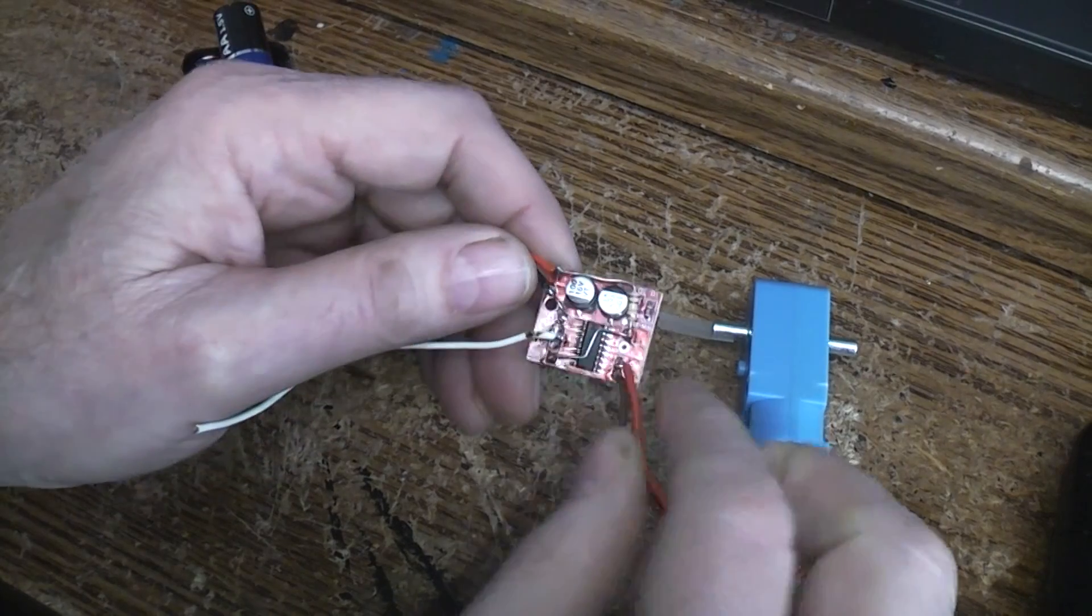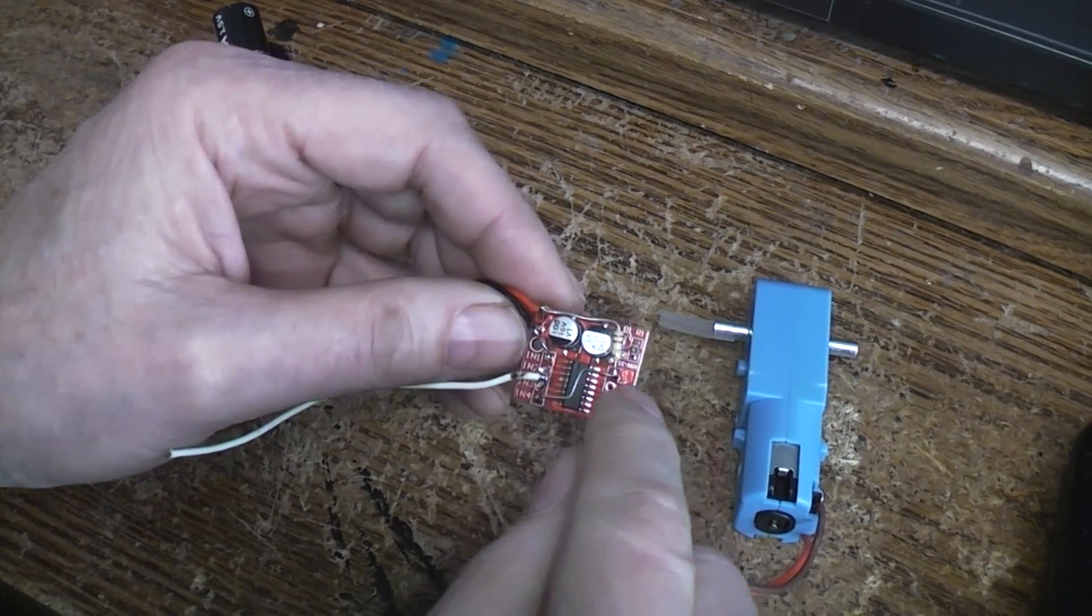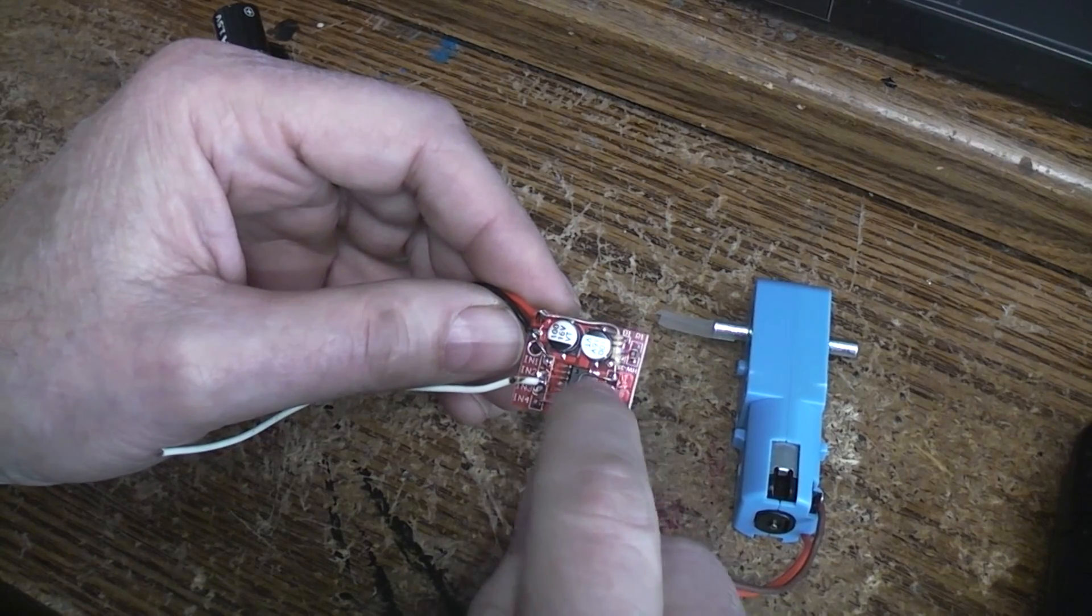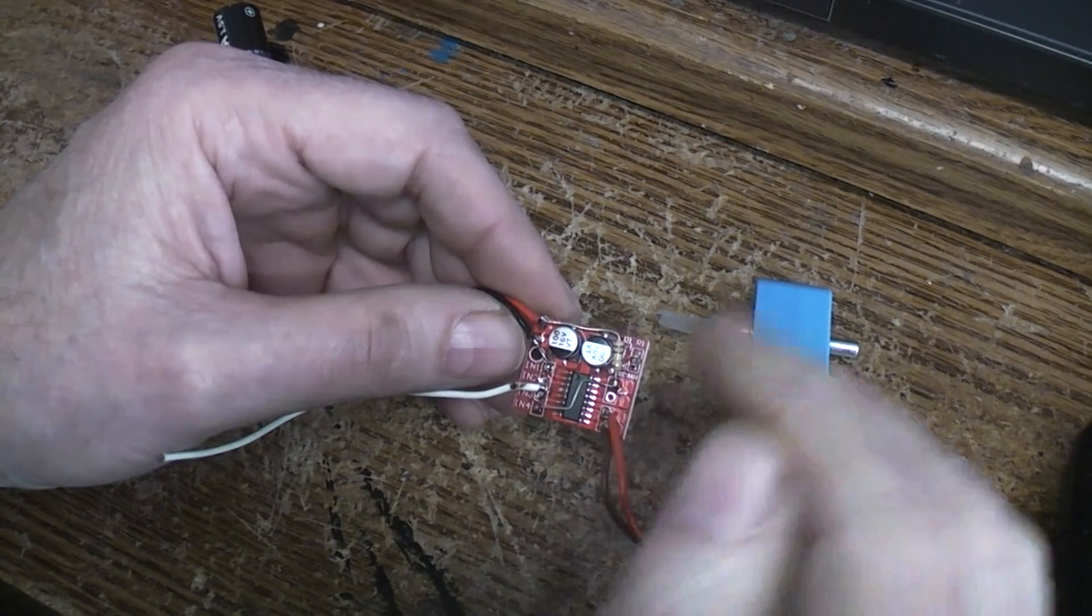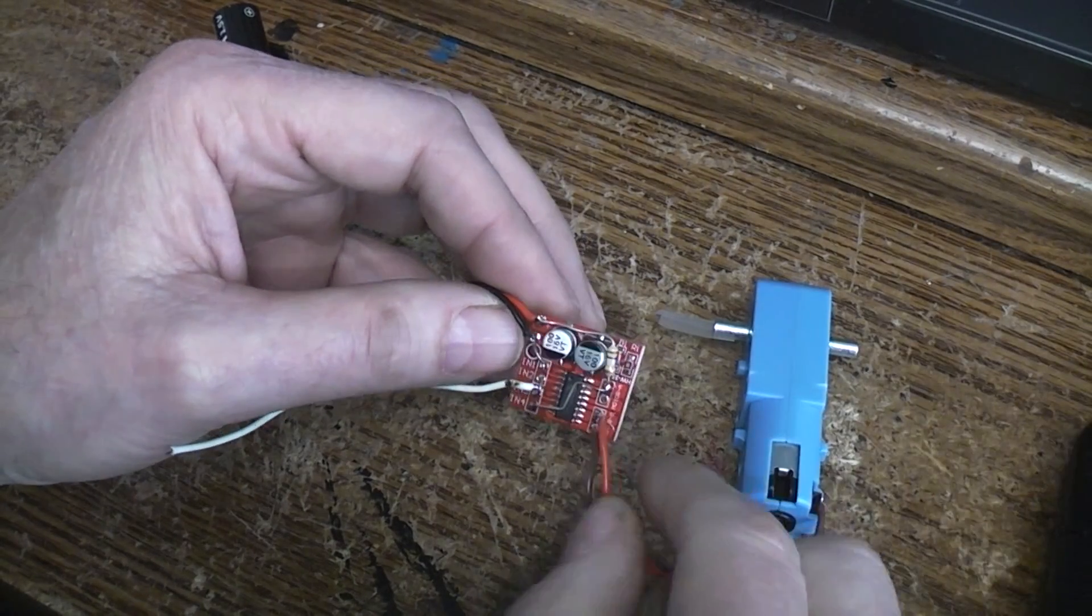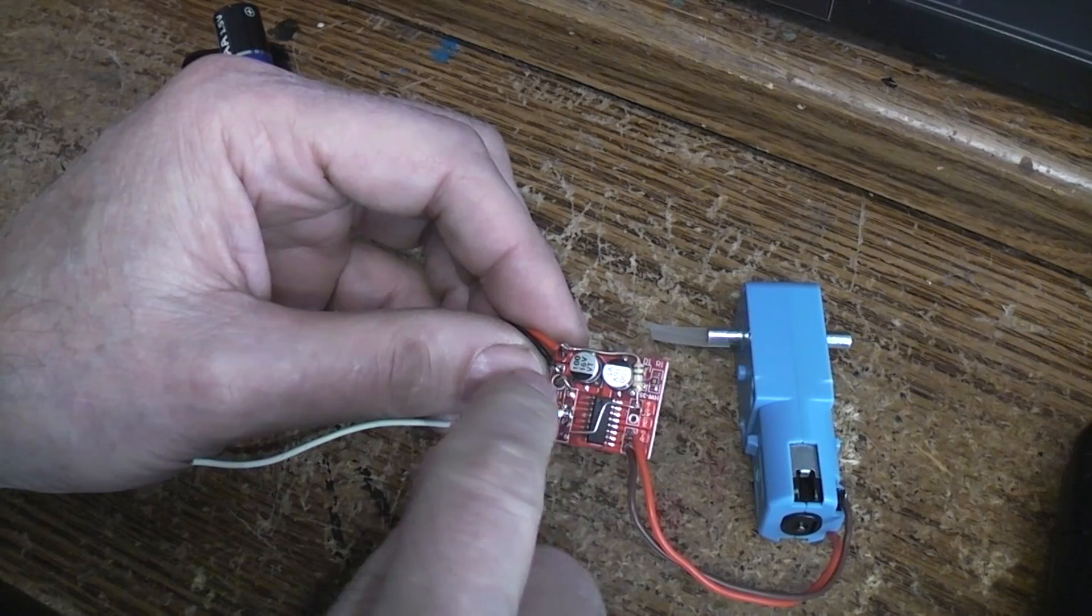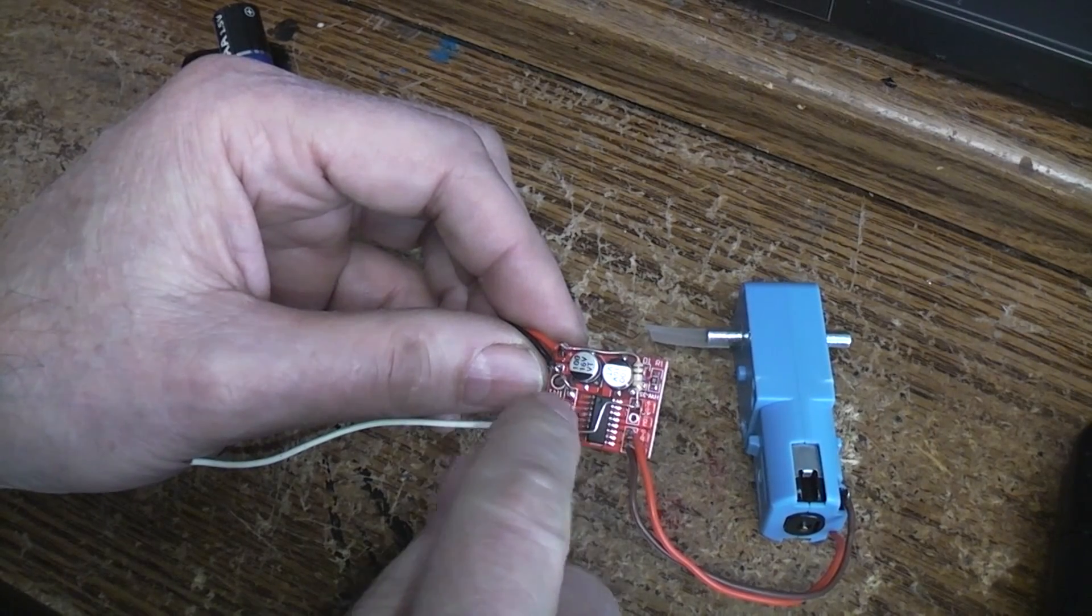So in this case, because H-bridge drivers have a third state, they're a tri-state output, they're not only any one of the output pins high or low, they're also an open circuit. They're tri-state. And that means there's a truth code to those two control lines coming in to it.